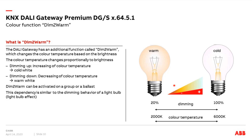The DIMM-TO-WARM function can be activated on a single group, single ballast, or multiple groups. It is not a feature of the complete output — we can do it per group. However, only one color function can be assigned per group or ballast: either DIMM-TO-WARM or human-centric lighting. You must decide which function that group or ballast will use.